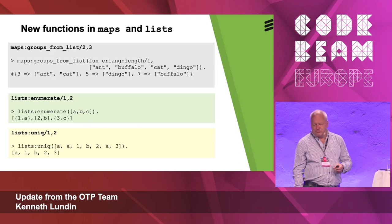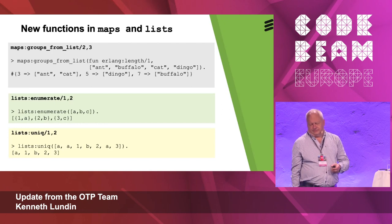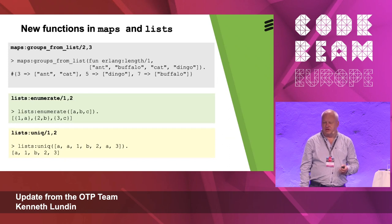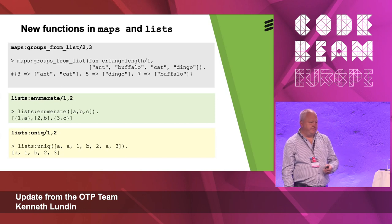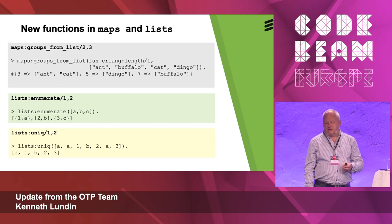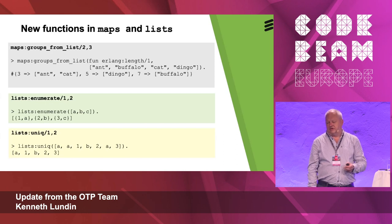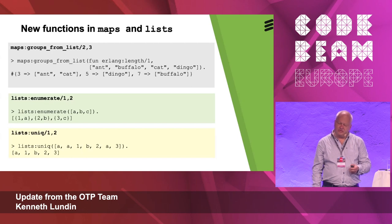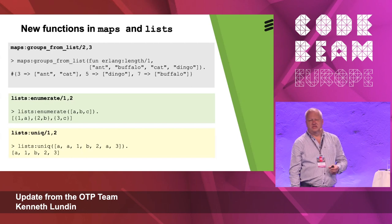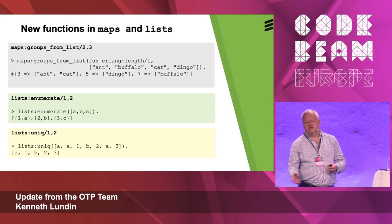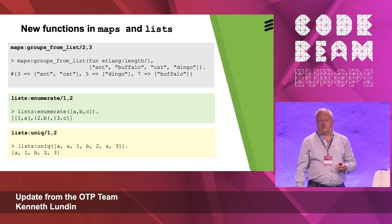Then we have lists:enumerate, which tells you what ordinal number each element in the input list has and returns a tuple with the number and element. We also have lists:unique, which removes duplicates from a list and preserves the order in the result. There is another function, lists:usort, which returns them in sorted order instead.